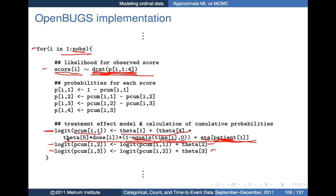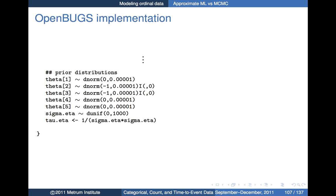Theta 2 and theta 3 in this case have to be negative, since they're the differences between subsequent intercepts. With the greater-than inequality, the second term has to be smaller than the first, and the third term has to be smaller than the second. Now we have the prior distributions.